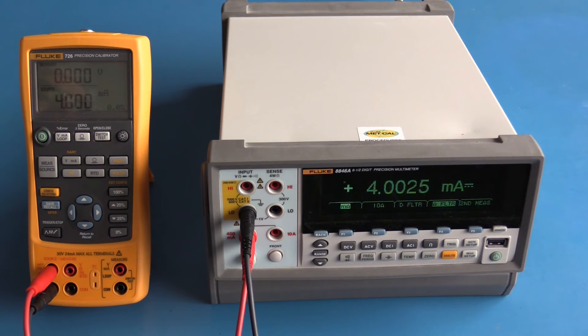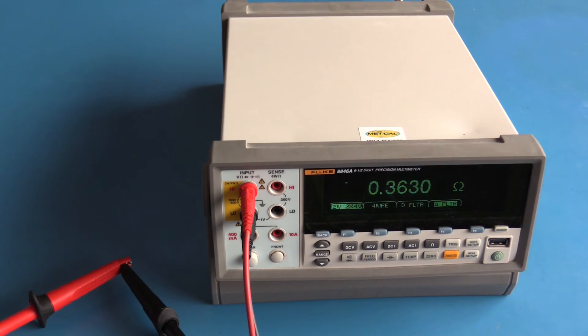The meter is now set up to make a resistance measurement. I have my two test leads shorted together. We're first going to look at a standard two wire resistance measurement on this meter so I need to zero out that offset.